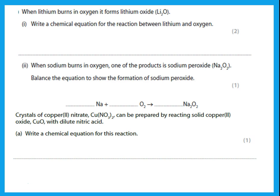When lithium burns in oxygen it forms lithium oxide. Write a chemical equation for the reaction. Lithium is Li, but oxygen must be O2 because oxygen is diatomic. The formula for lithium oxide is given as Li2O. Two oxygens before the arrow, so put 2 in front of Li2O — but that makes 4 lithiums, so put 4 in front of Li. That balances the equation.